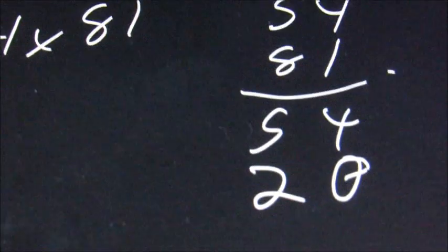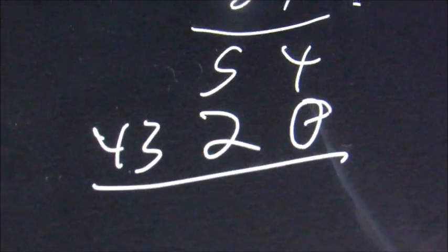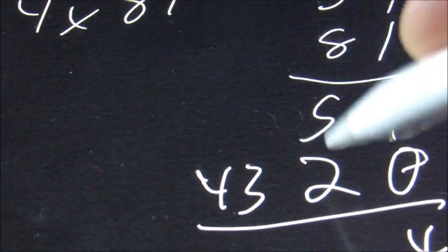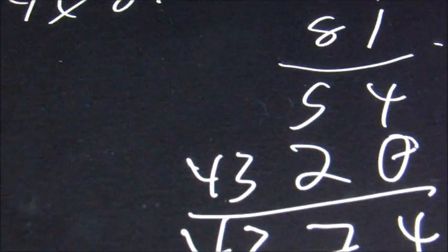And now 8 times 4 is 32. 8 times 5 is 40, plus 3 is 43. And now you're going to add these numbers. So 4 plus 0 is 4. 5 plus 2 is 7. And it's just 4, 3. So 4,374 would be the answer here.